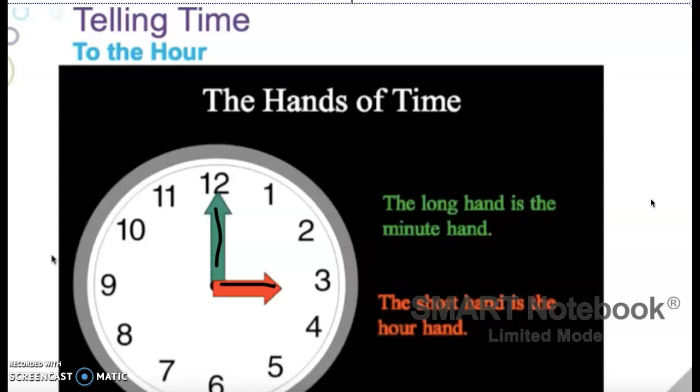The way that you can keep these two straight is that minute is longer than the word hour. So the minute hand is always going to be the longest and the hour hand is always going to be the shortest. It's a good way to keep which one is which.